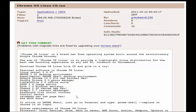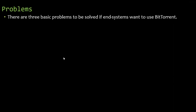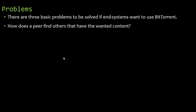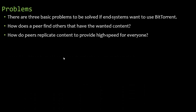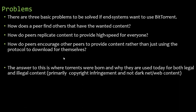Here's an example from the Pirate Bay — the Linux operating system, which is an ISO file and a free operating system, would be completely legal to download. There are three basic problems to solve if systems want to use BitTorrent: how does a peer find others that have the wanted content; how do peers replicate content to provide high speed for everyone; and how do peers encourage others to provide content rather than just downloading for themselves? This is where torrents were born and why they're used today for both legal and illegal content.